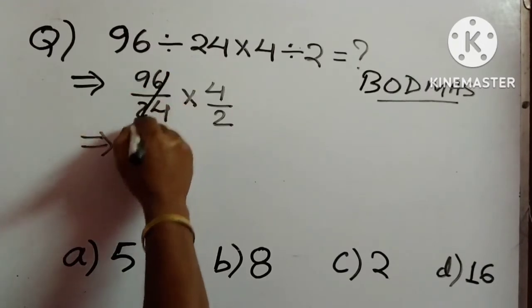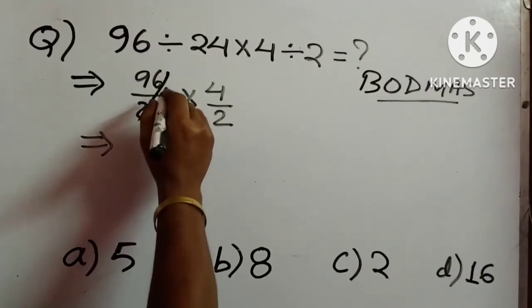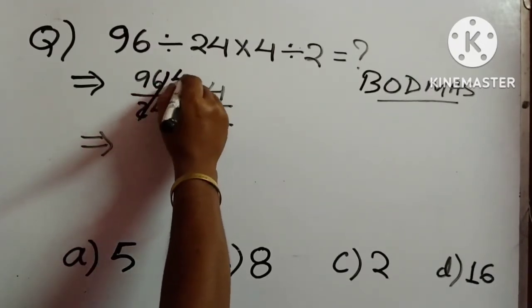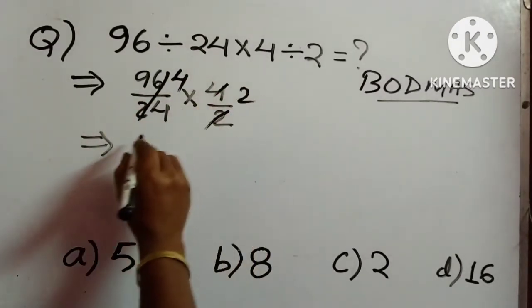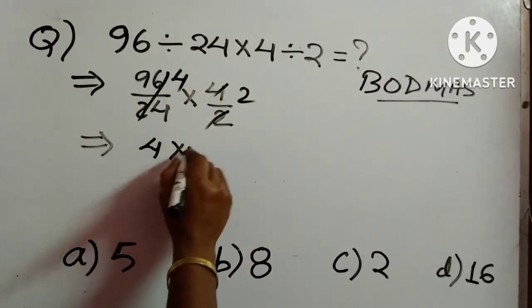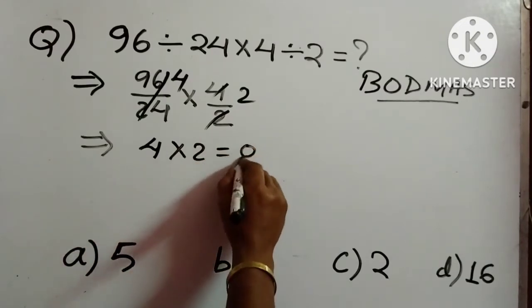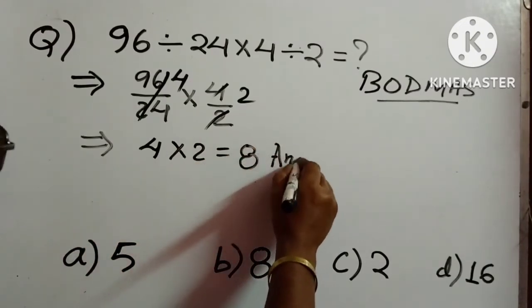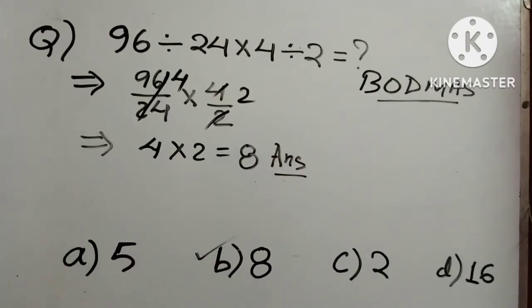So if you will cancel this one, then it comes to 4 and this will be 2. So 4 into 2 is how much? 8. So 8 is the answer. So option B.